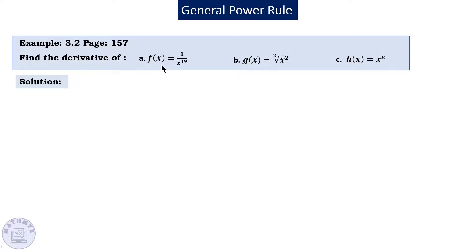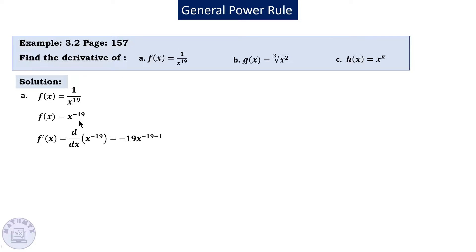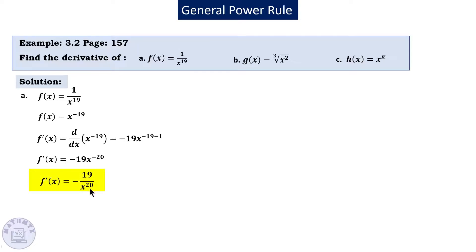The first example: f(x) = 1 over x to the power 19. Rewrite the function as a negative power, then apply the power rule — take the power, multiply it with the expression, and subtract 1 from the previous power. This gives negative 19 x to the power negative 20. The simplest form uses a positive power, so rewrite it back in the denominator.